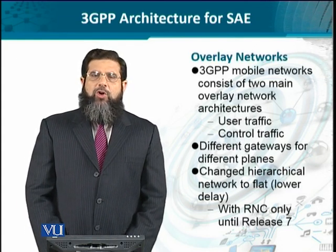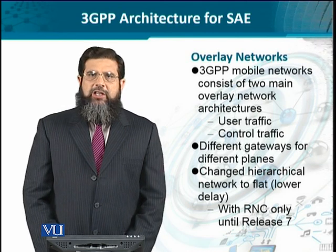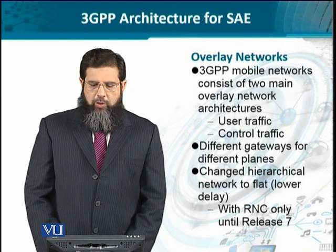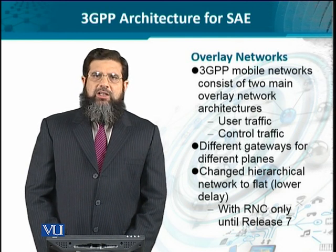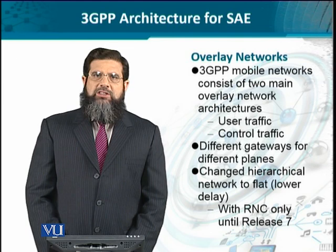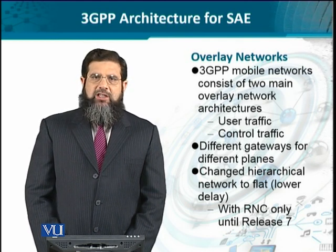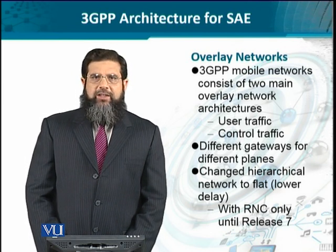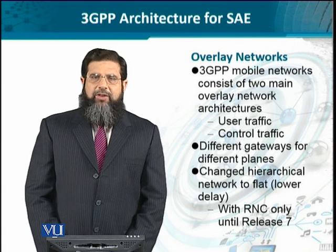The overall architecture saw the migration from monolithic networks — including both the bearer path and the signaling path — to a more overlay concept. Overlay means that on a physical network, multiple functional networks can be overlaid. 3GPP mobile networks are based on two main overlay network architectures, primarily splitting the functionality of the user plane and the control plane, so user traffic is routed differently from control signaling traffic.